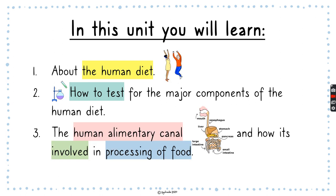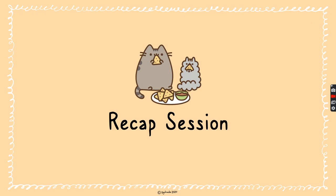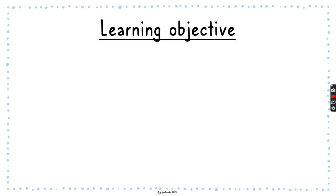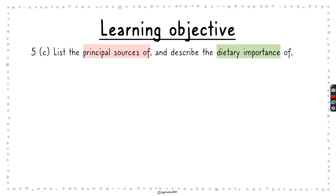In the future, we're going to look into the human alimentary canal and how it is involved in processing of food. Let's do a recap session of what we have learned so far. We covered 5.1 nutrients, learning objective C, which talks about listing the principal sources — remember that principal sources means where you can find these nutrients.